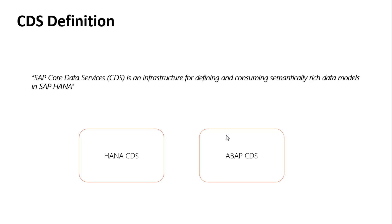ABAP CDS is not native to HANA — you can write it anywhere — but it is recommended that you have HANA as the backend to get maximum performance. In HANA CDS, both Design Time and Runtime are in HANA. In ABAP CDS, the runtime happens in HANA or whatever database you have, and Design Time is written in the ABAP layer. Going forward, we will be concentrating only on ABAP CDS because this is where we will be creating everything.